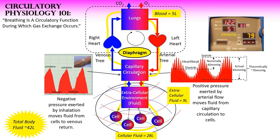When that happens, arterial pressure must rise. The autonomic nervous system knows about flow and pressure in the arterial tree, and it compensates by increasing the pressure with which the left heart tries to move blood into the arterial tree and into the capillary circulation. The imperative is that the capillary circulation ultimately nourishes all of the cells in the body, estimated at approximately 100 trillion.